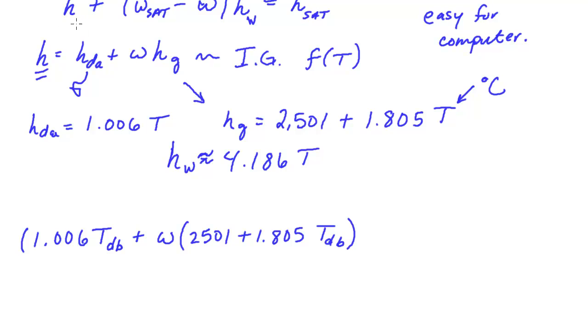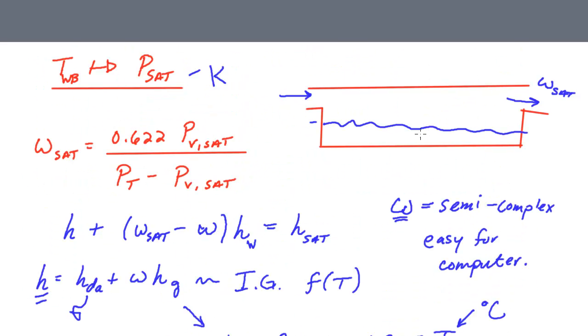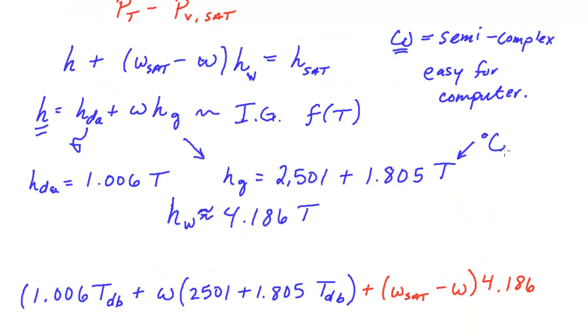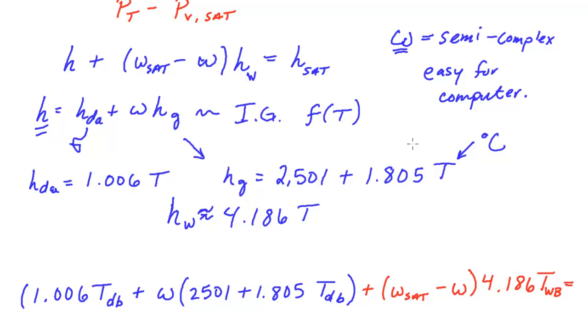We also need the omega at that condition along with this term here, so we have 2,501 plus 1.805 times T dry bulb. That was this first term. We have this next term which was omega sat minus omega times h of the liquid water which we have is 4.186. Remember we've made this definition that at the wet bulb temperature the liquid water that's entering is at that wet bulb temperature.